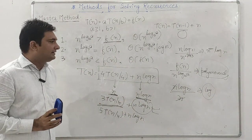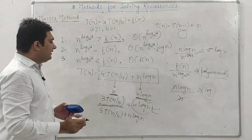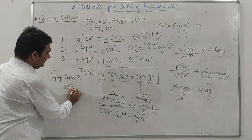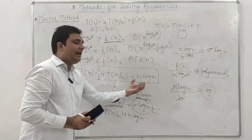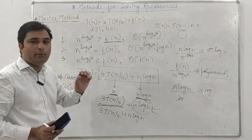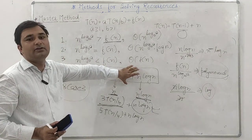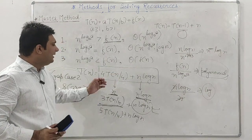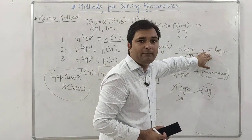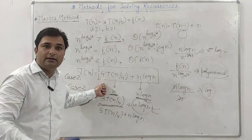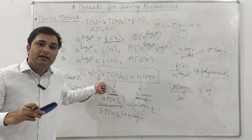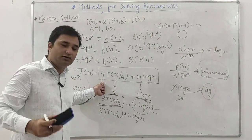The key insight here is: there is a gap between Case 2 and Case 3 for recurrences of this type. When f(n) = n log n and n^(log_b(a)) = n, dividing these gives a pure logarithmic term — no polynomial factor — so the master method fails in this gap region. This is a known drawback of the master method.